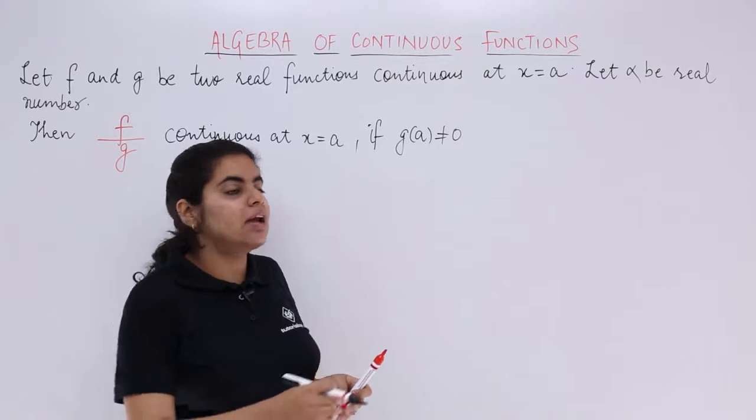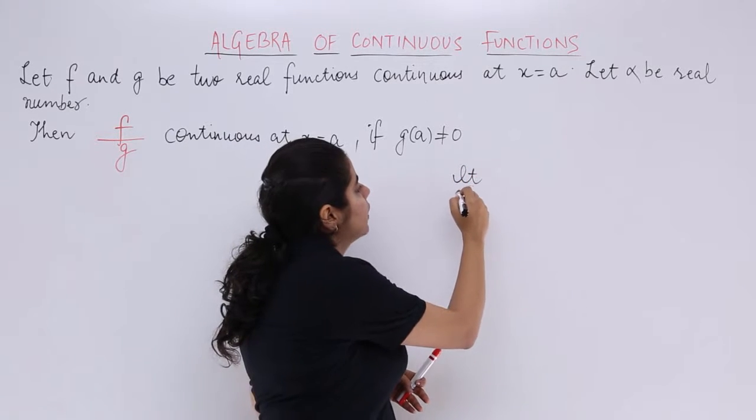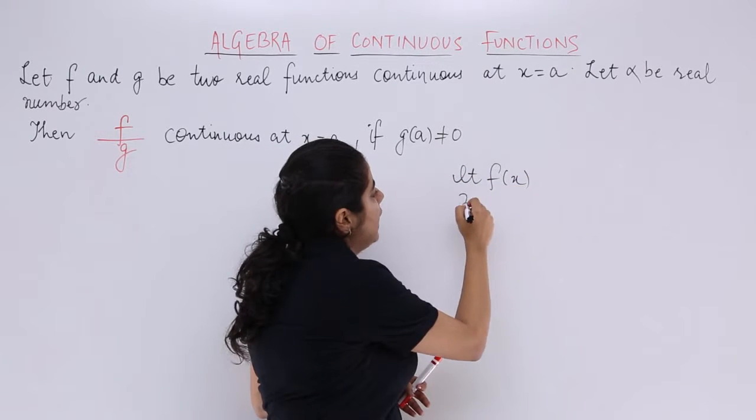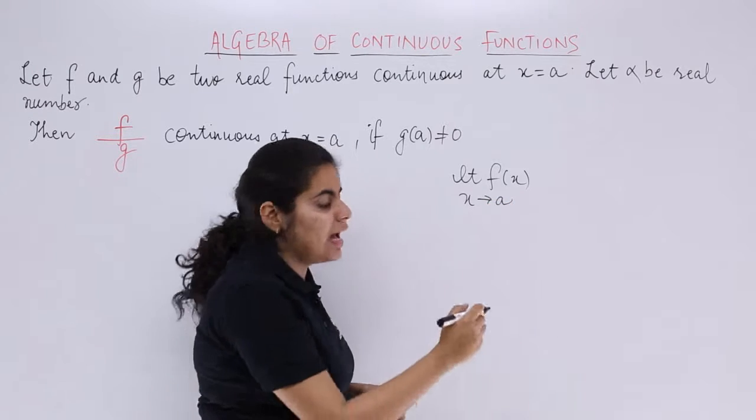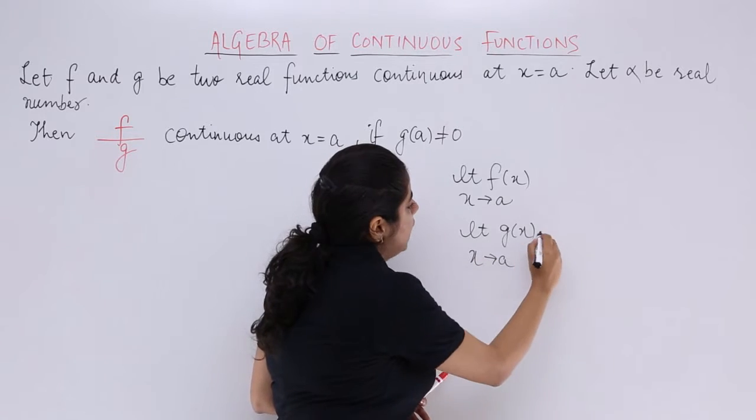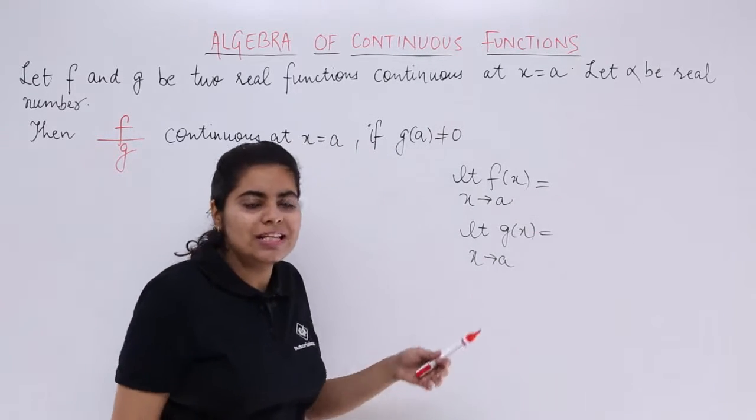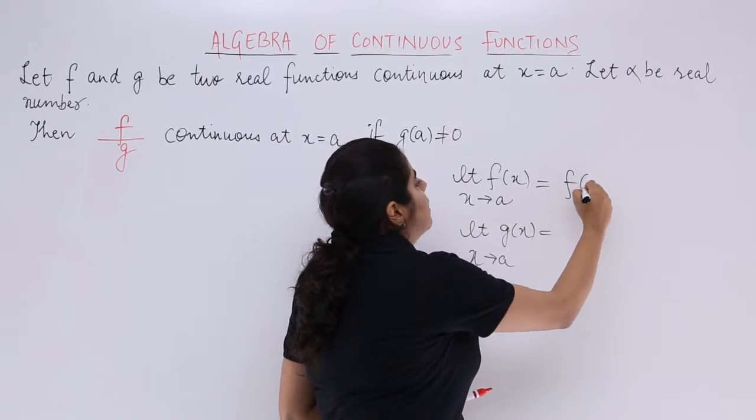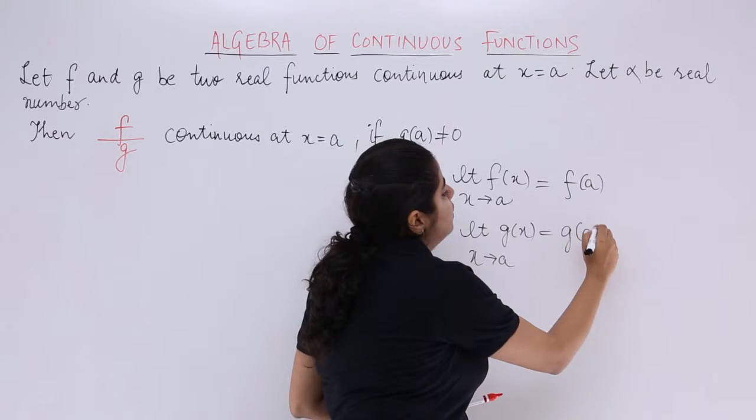Now individually speaking, what about limit f(x) at x tends to a, and what about limit g(x) at x tends to a? From the previous videos, you can directly speak the answer: this becomes equal to f of a, this becomes equal to g of a.